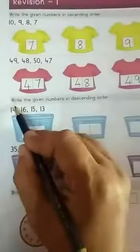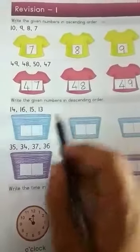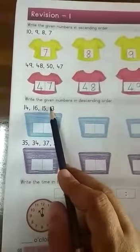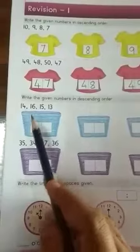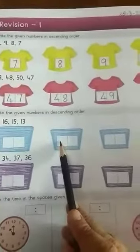Now look down. Write the given numbers in descending order. See children, here also some numbers are given. But we have to arrange these numbers in descending order. We have to write first biggest number, then smallest, then the smallest one.